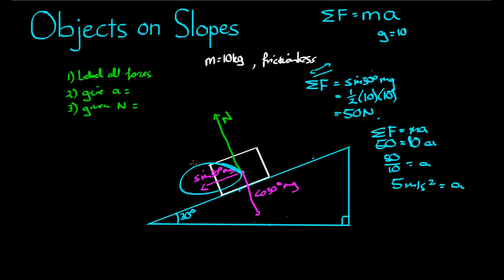5 meters per second squared is equal to the acceleration. So this force here, which is equal to 50 newtons, is accelerating this block in that direction at 5 meters per second squared. So we've solved part of our question already.